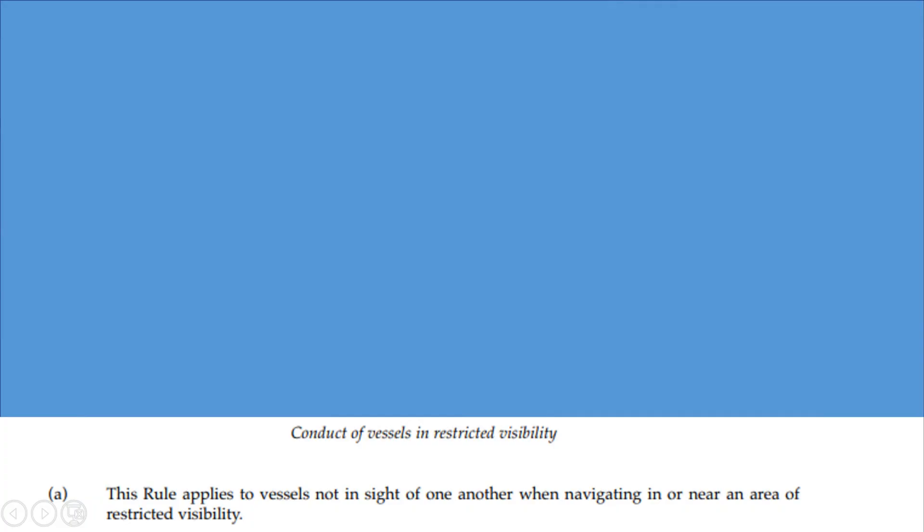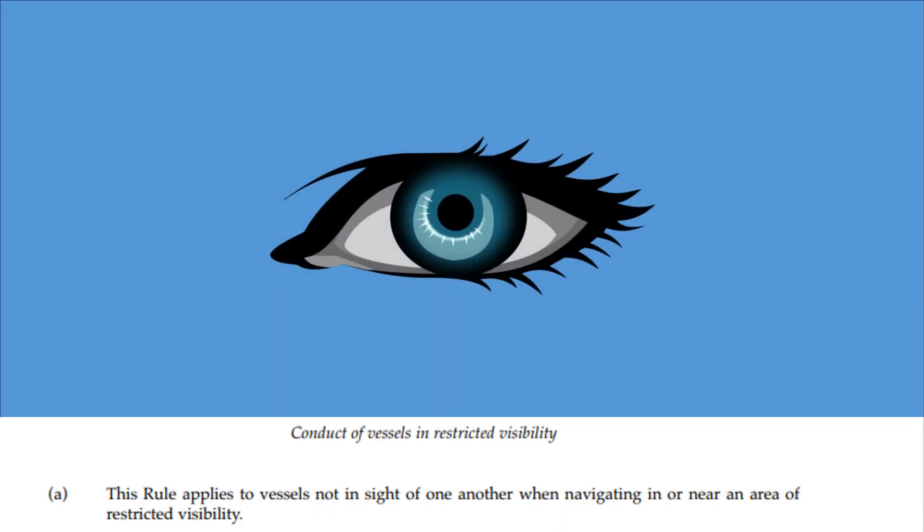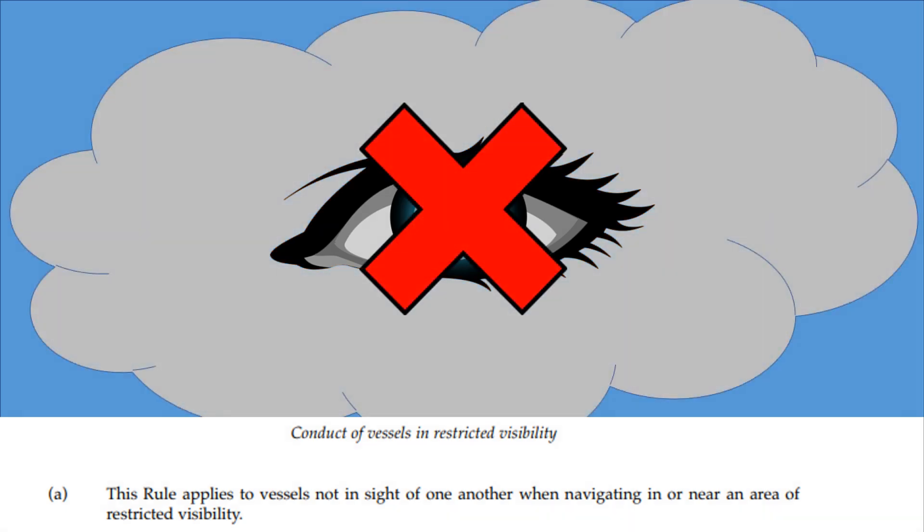Rule 19 Conduct of Vessels in Restricted Visibility. This rule applies to vessels not in sight of one another when navigating in or near an area of restricted visibility. That opening sentence means that when we're navigating in an area of restricted visibility, which would be caused by fog, mist, heavy rain, or whatever other circumstance, we cannot see other vessels with the naked eye, whereas under normal circumstances we would be able to see vessels with the naked eye.